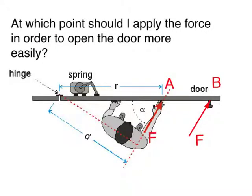At which point should I apply the force in order to open the door more easily — A or B? Your personal experience will have told you that it is better to apply the force at point B. But why is that so? If the door can open more easily, it must be due to the fact that it has experienced a bigger turning effect. Can we use the concept of moment to explain this?